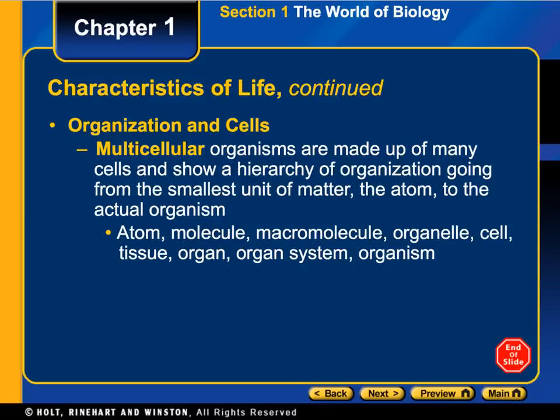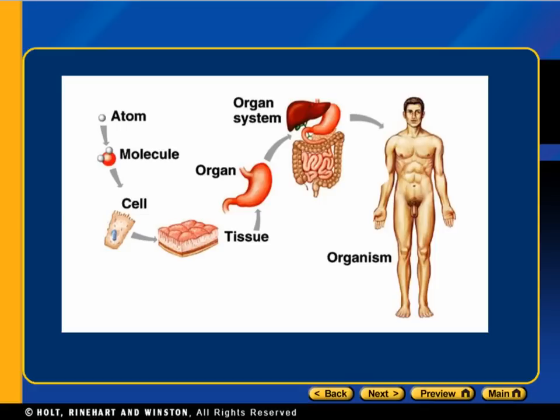Multicellular organisms are far more advanced; they show a hierarchy of organization. We start off with atoms. Put a bunch of atoms together and you have a molecule. A bunch of molecules make up a macromolecule. Macromolecules make up organelles, organelles make up cells, cells make up tissues, tissues make up organs, organs make organ systems, and then eventually you have the organism. There is a diagram of that.